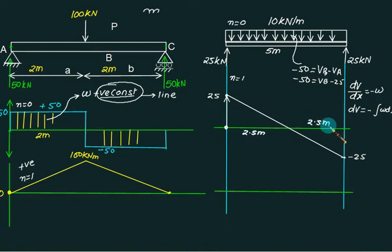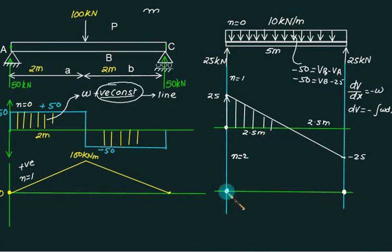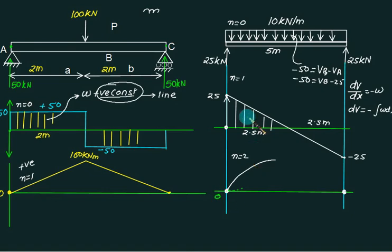Where the shear force is zero, naturally the bending moment is maximum. In this figure the shear force is a positive value but is decreasing, so it's a positive decreasing parabola — there is no bending moment on the left side and right side. We have n equal to 2, representing a parabola with a positive slope that is decreasing. Only this parabola represents positive slope with decreasing slope; the other parabola is not possible because it has an increasing slope. To calculate the change in bending moment, the previous bending moment is 0 and this area was 1 by 2 multiplied by 25 multiplied by 2.5, giving 31.25 kN·m.